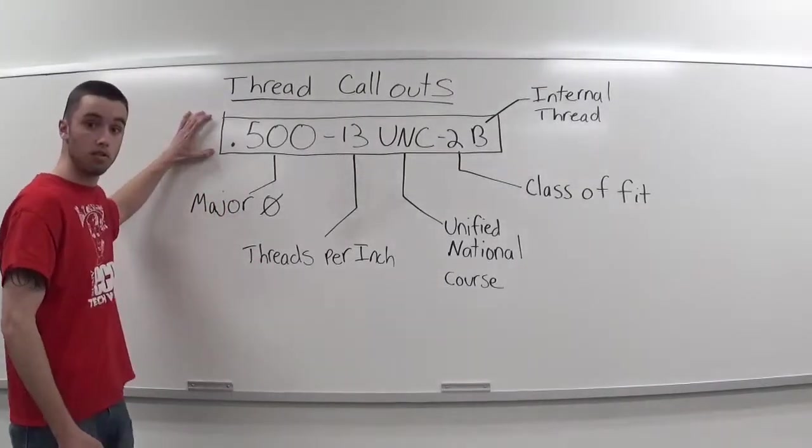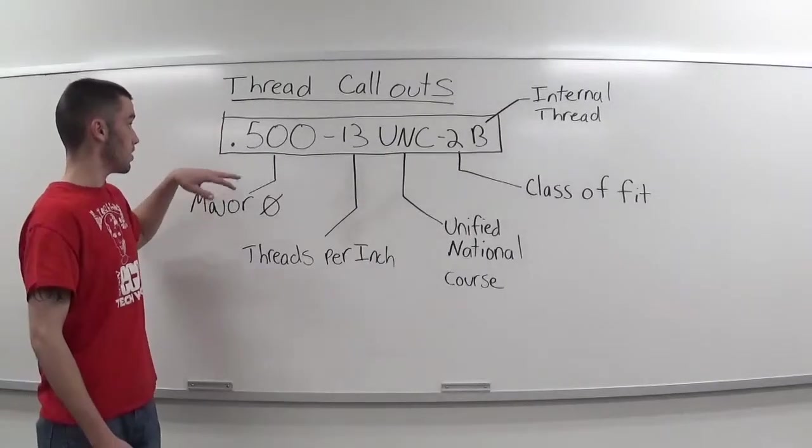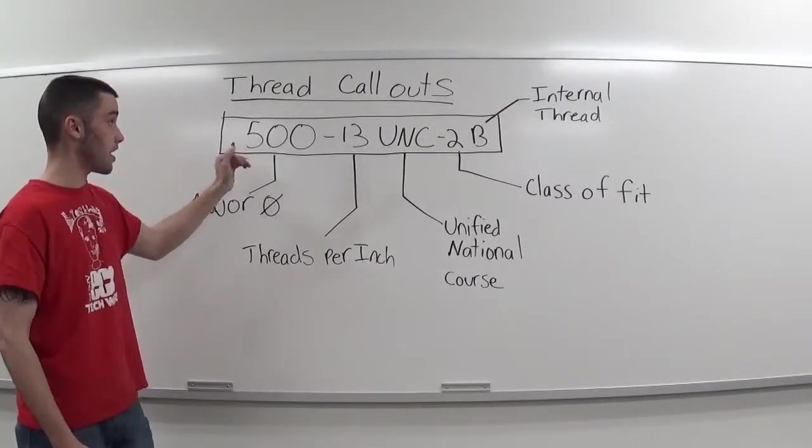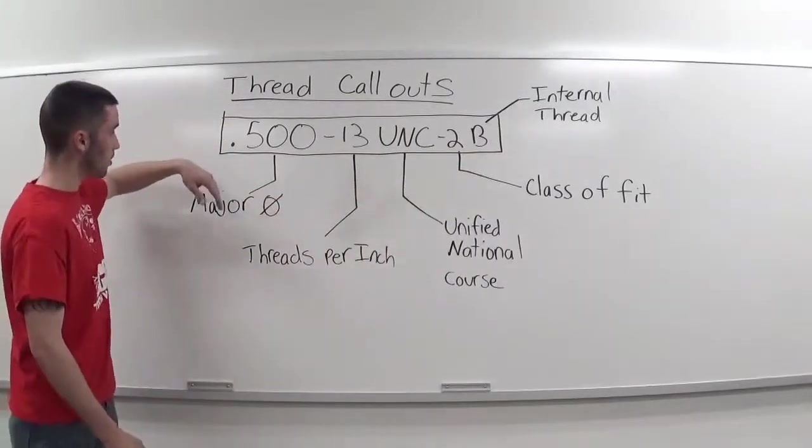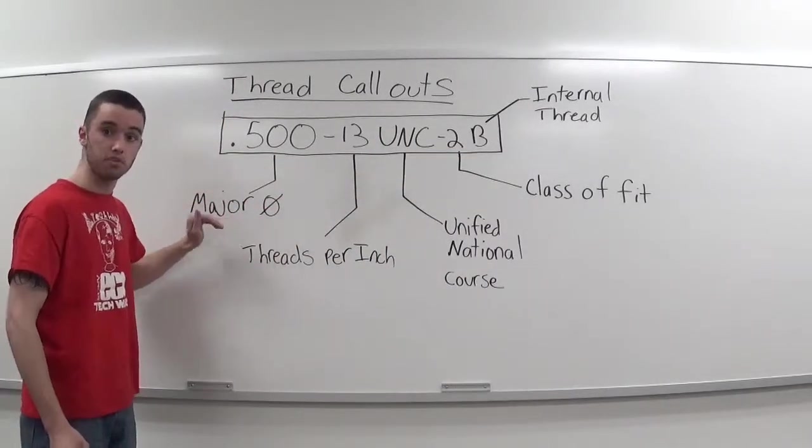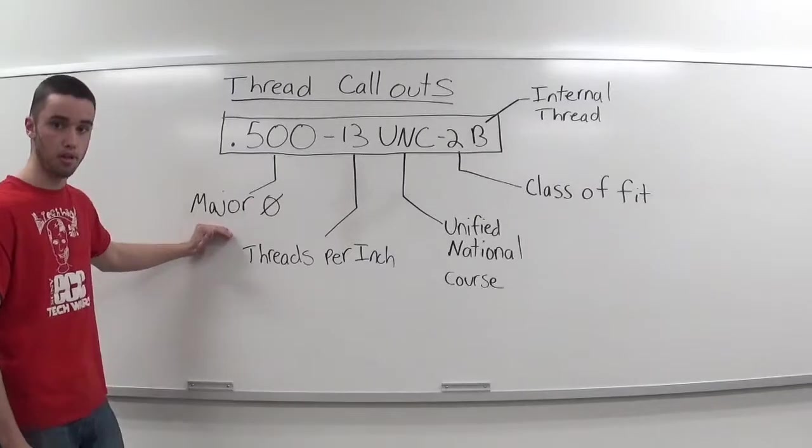Here's an imperial callout. You have a half inch or 500 thou by 13 UNC 2B. So 500 thou or half inch, that is your major diameter of the thread.